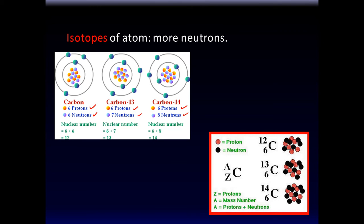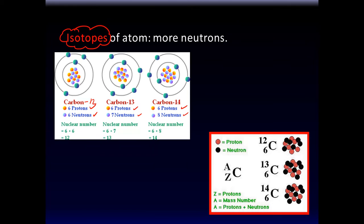A same atom with a different number of neutrons is called an isotope. Carbon commonly has three isotopes: carbon-12 (regular carbon), carbon-13, and carbon-14. Carbon-14 is radioactive and is used for radioactive dating. So isotopes are atoms with a different number of neutrons.